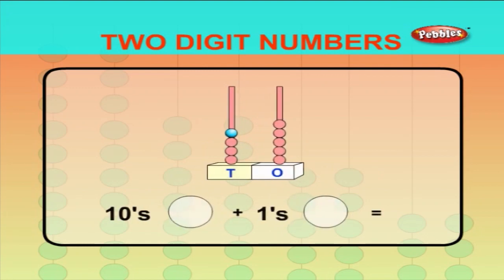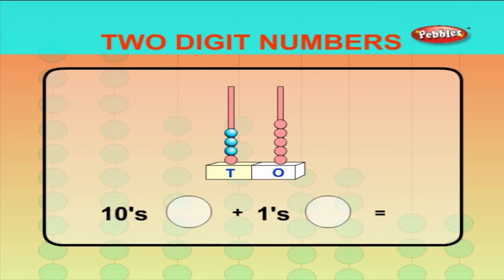Now, from the given abacus, let us count the beads and write the answer. One, two, three, four, five. There are five beads in the ones position. So, the number is 45.